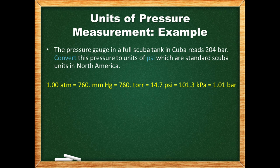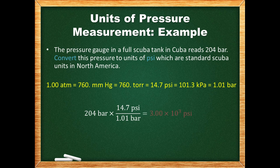The SI unit of pressure is the pascal, named after French physicist and mathematician Blaise Pascal. It is defined as 1 newton per square meter, but because it's so small it's often expressed in kilopascals. The unit of the bar is very close to standard atmospheric pressure. To convert from bar to psi, we use the conversion factor of 14.7 psi per 1.01 bar. Based on 3 significant figures, our final answer is expressed to 3 sig figs.